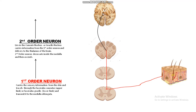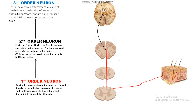After decussating, the second-order neuron ascends and synapses in the thalamus of the brain, where the third-order neuron lies. The third-order neuron lies in the ventral posterior lateral nucleus of the thalamus. There are many nuclei in the thalamus, and one of them is the ventral posterior lateral nucleus, inside which the third-order neuron resides.